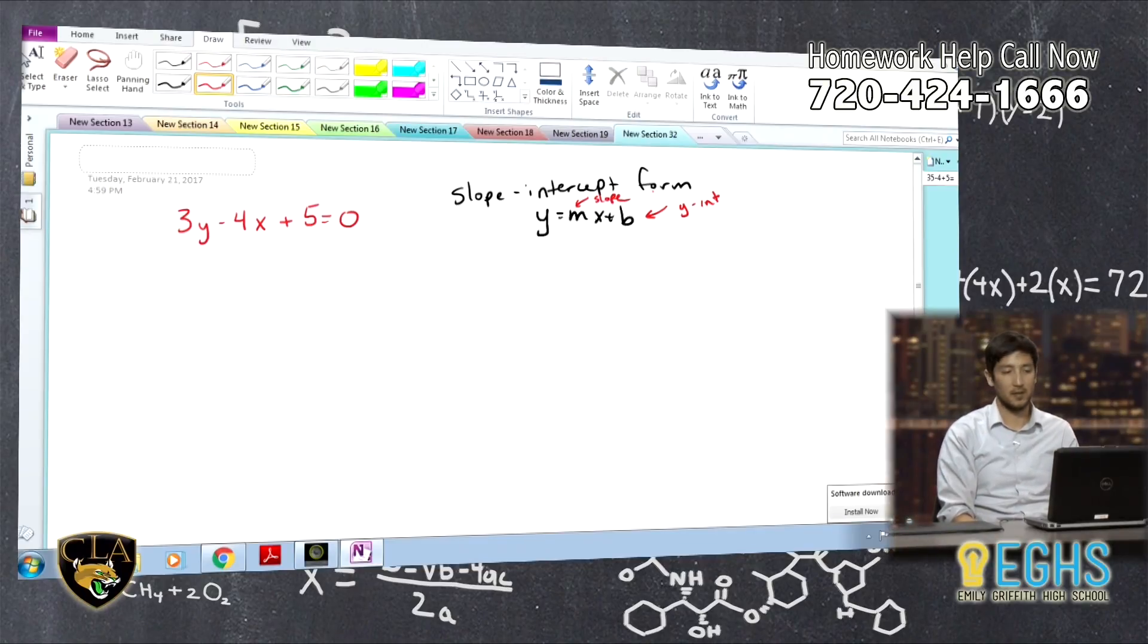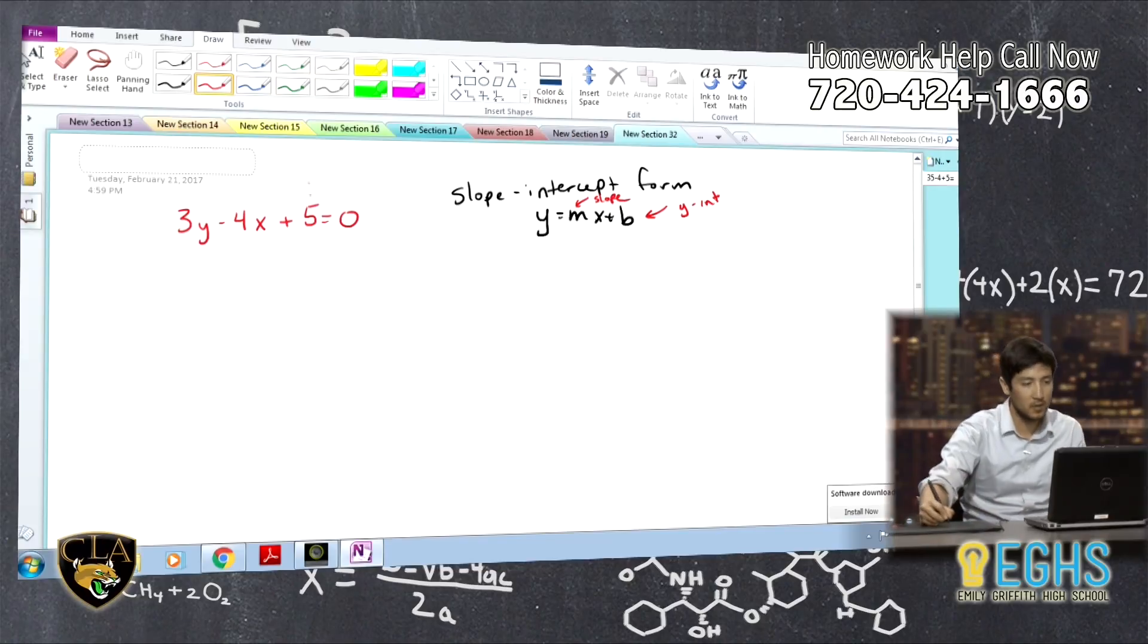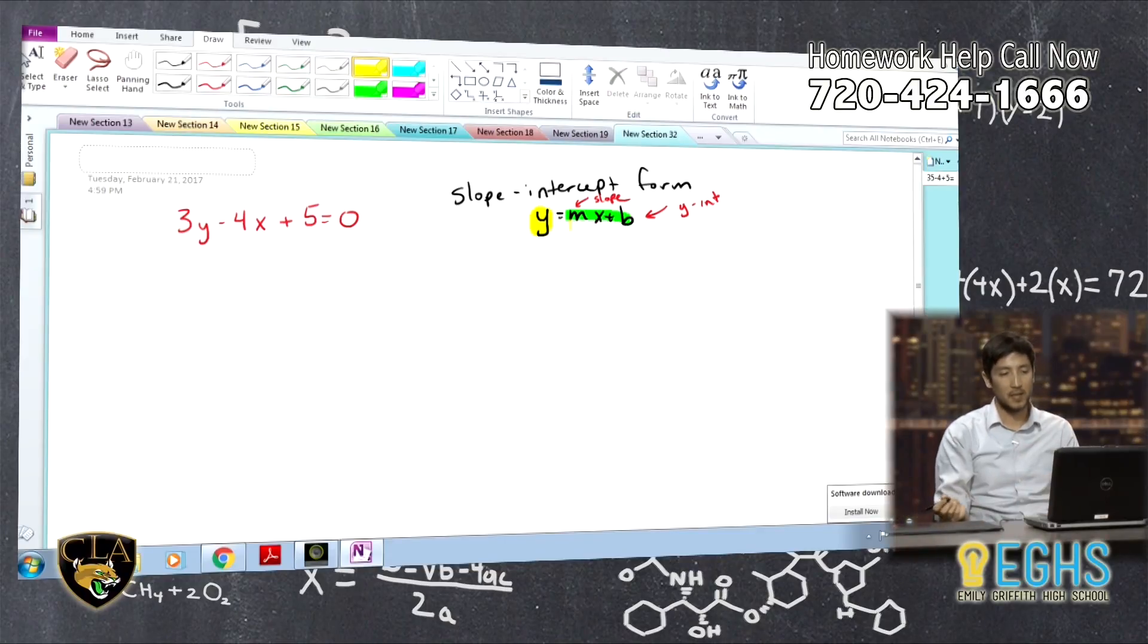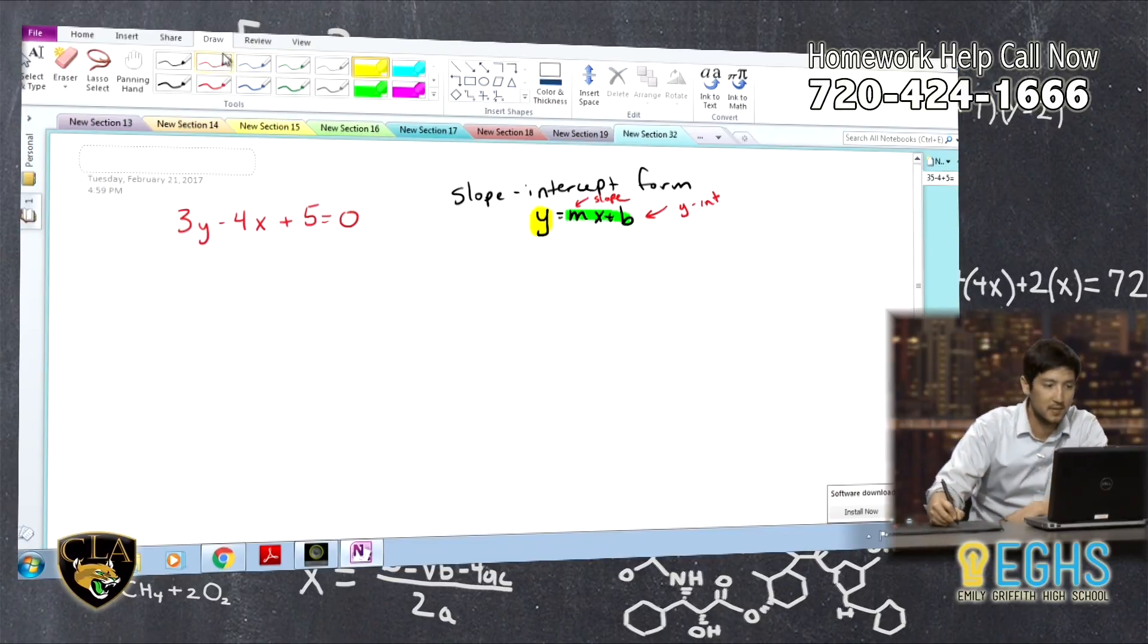We need our equation to basically look like this. And if you look at it, one thing that should stand out, this can sometimes be a little bit confusing when you're first learning it. But what you should notice is this y is all by itself. It's not adding or subtracting anything, or it's not being added to or subtracted from. It's not being multiplied by anything. So, ultimately, what we're trying to do is solve for y in terms of x.